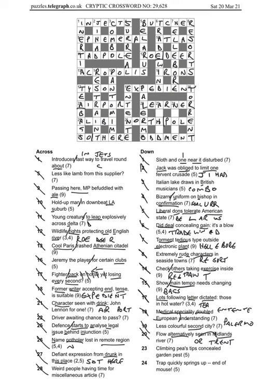And then 23 down: climbing peas tips. So the tips of peas is P and S, and they're climbing so that means they're going the other way. Concealed is hid, and that gives us APHID for a garden pest. And final one, 24 down: trap quickly springs up. So come quickly, come soon, going up, springs up going the other way. And the end of mouse E gives us a NOOSE, which is a trap I guess.